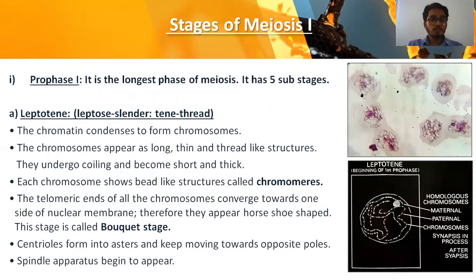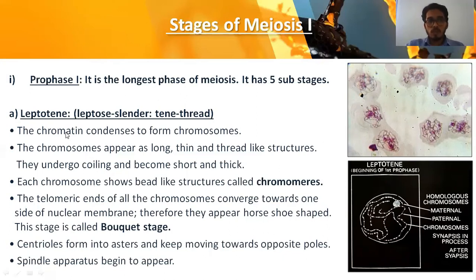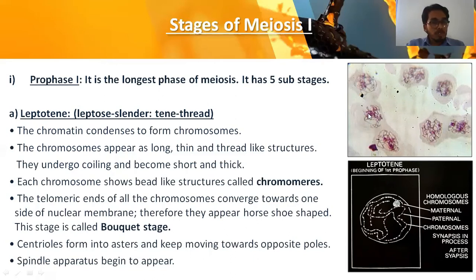Prophase one is the longest phase of meiosis, having five sub-stages. The first sub-stage is leptotene. The term 'leptos' refers to slender and 'tene' refers to thread. Under the microscope, cells appear as if they have slender thread-like structures — the chromatin network or chromosomes appear as slender thread-like structures.